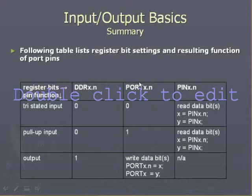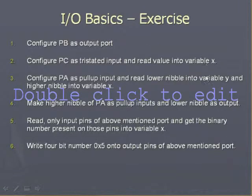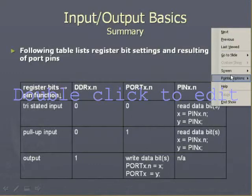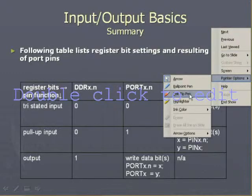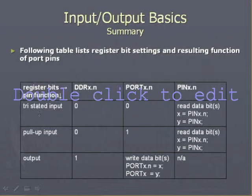Keeping DDR at 0 (input), if you change the bit in the PORT register to 1, the pin becomes a pull-up input, and again the PIN register is used to read data. When you configure DDR as 1, the port becomes an output port, and in that case the PORT register is used to write data values onto the port pins. The PIN register is not typically used for output, but if read, it will reflect the same value written to the PORT register.